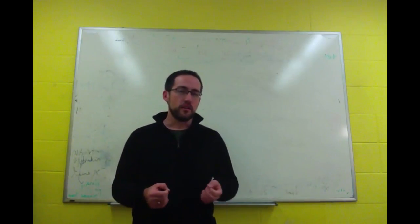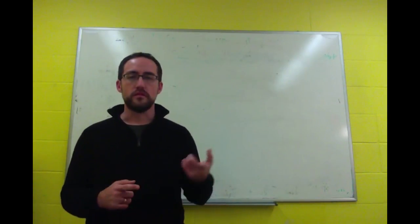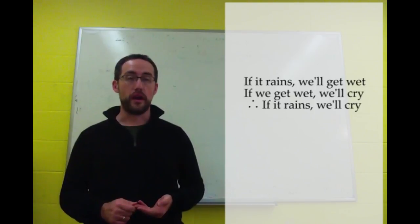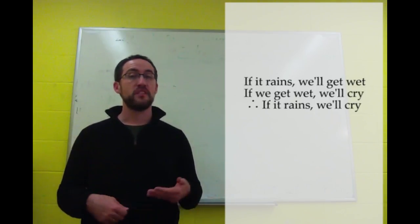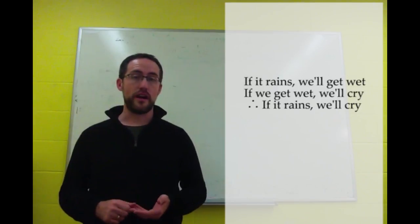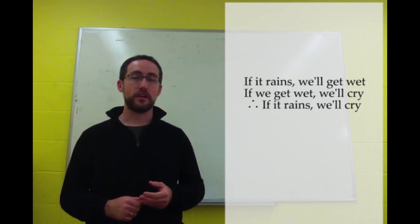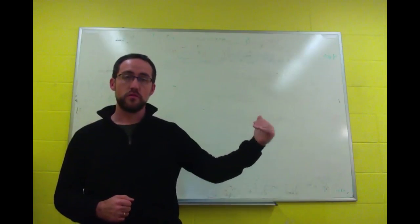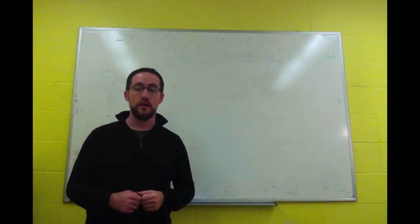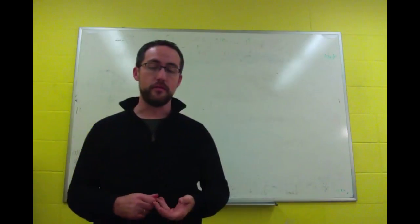But there are syllogisms that are a little more complex too. So for instance, this one: if it rains, we'll get wet. If we get wet, we'll cry. If it rains, we'll cry. That we can conclude. If the first two are true, the third one has to be true. There's no way around it. That's how entailment works.